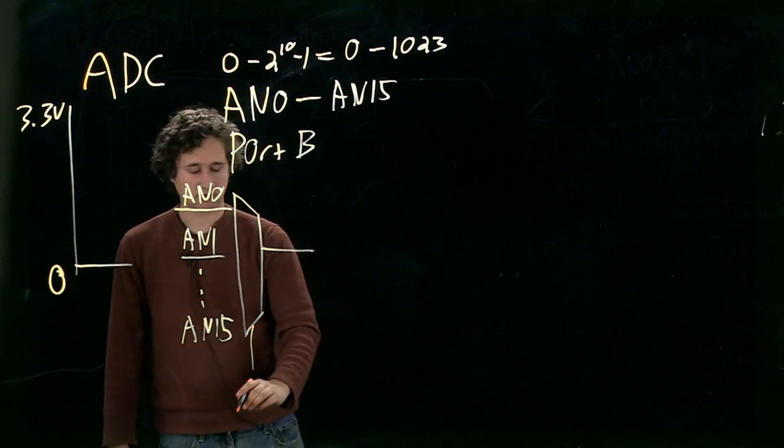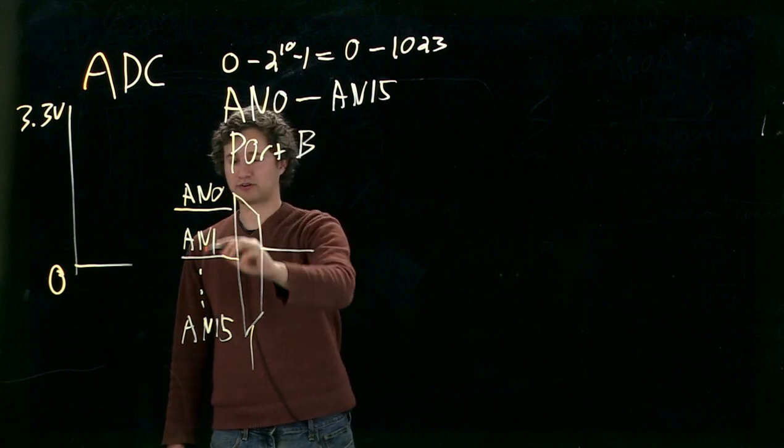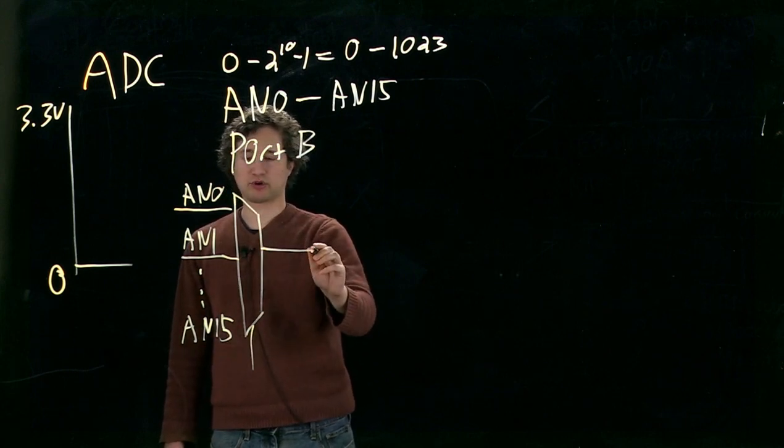And essentially, what the multiplexer lets us do is, in software on the PIC, we can select which one of these pins is output over here.